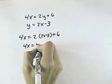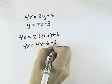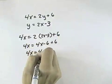Now I've got an equation just in terms of x, and if I multiply it out, I can simplify and solve for x. So I have 4x equals 4x.